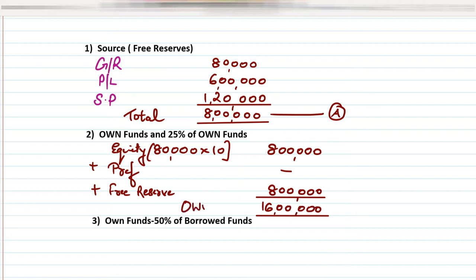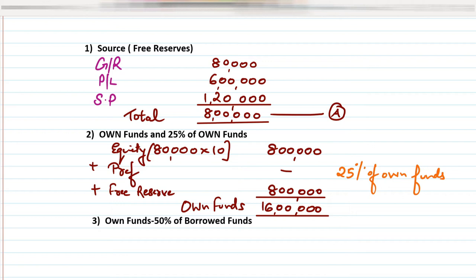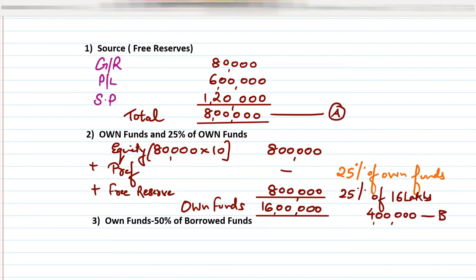This 16 lakhs is our own funds. The rule says 25% of own funds. So 25% of 16 lakhs gives us 4 lakhs. This 4 lakhs is marked as Alphabet B. Alphabet B has now been calculated as 4 lakhs.